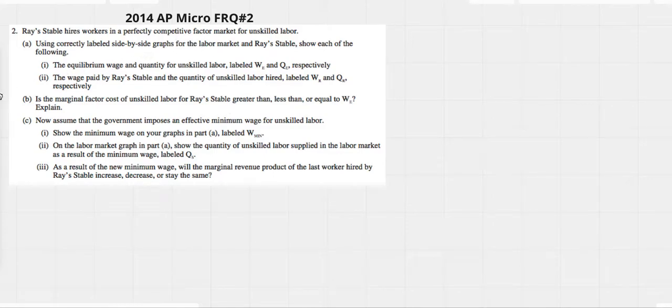Charles here. Let's do 2014 AP Micro FRQ number two. It's obviously a labor or factor market.